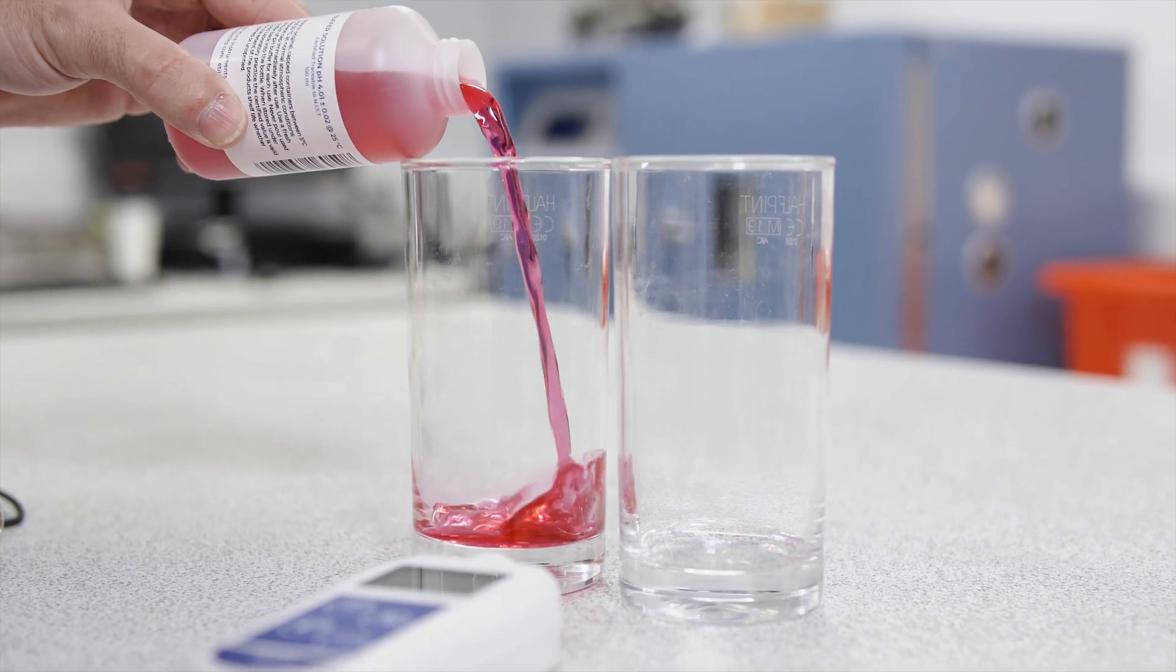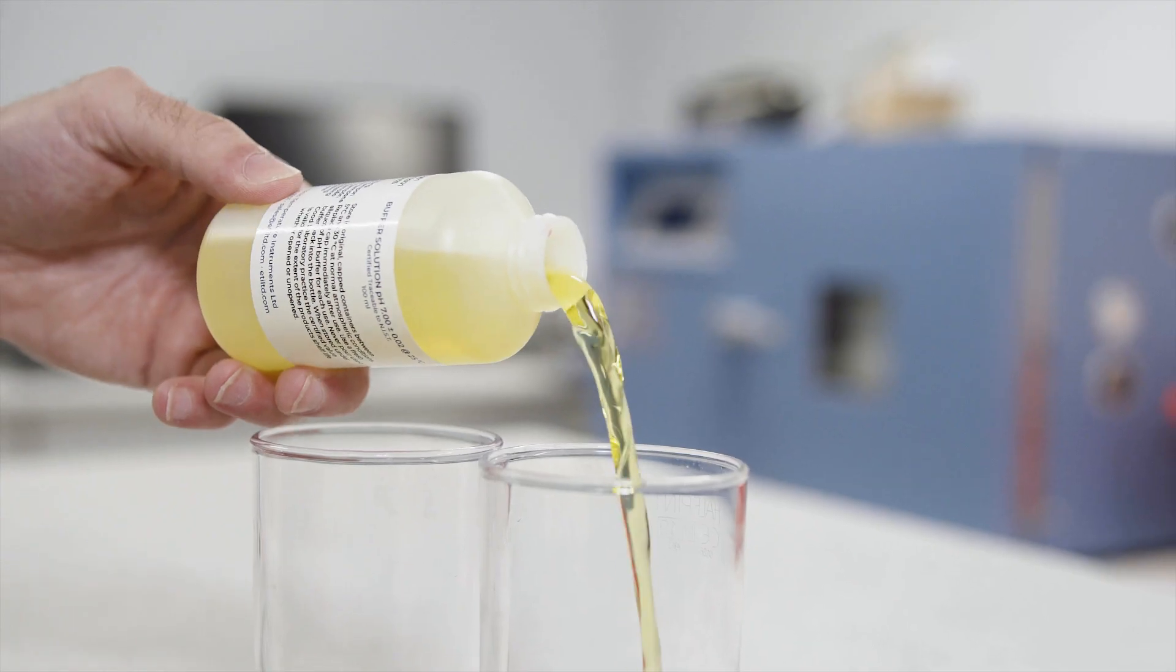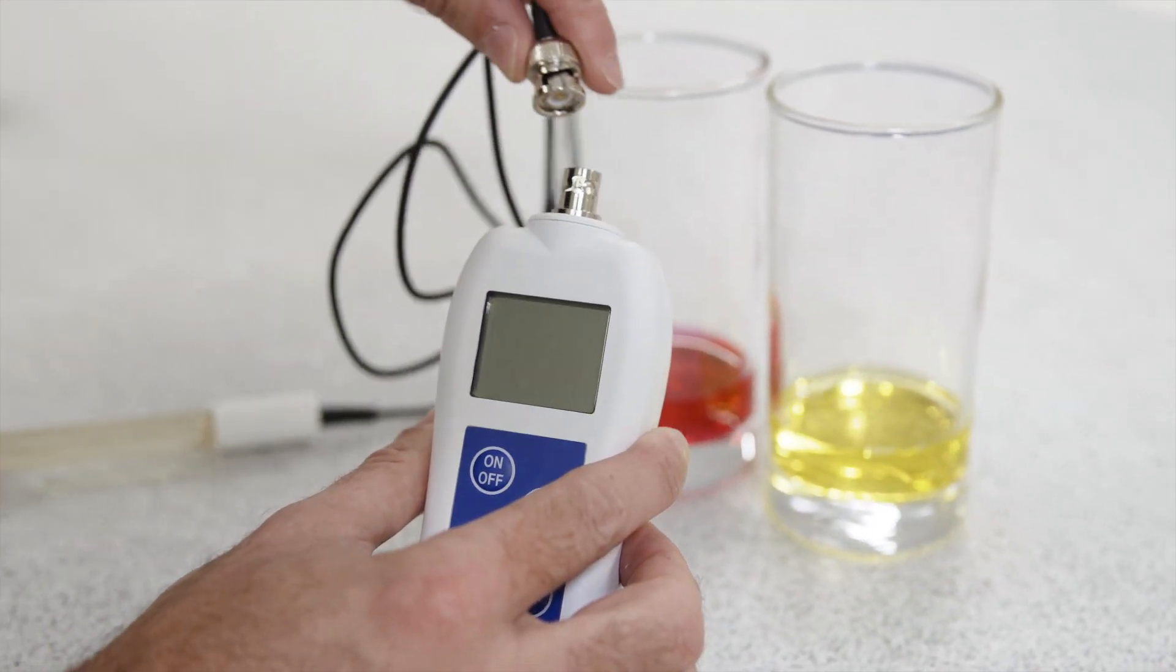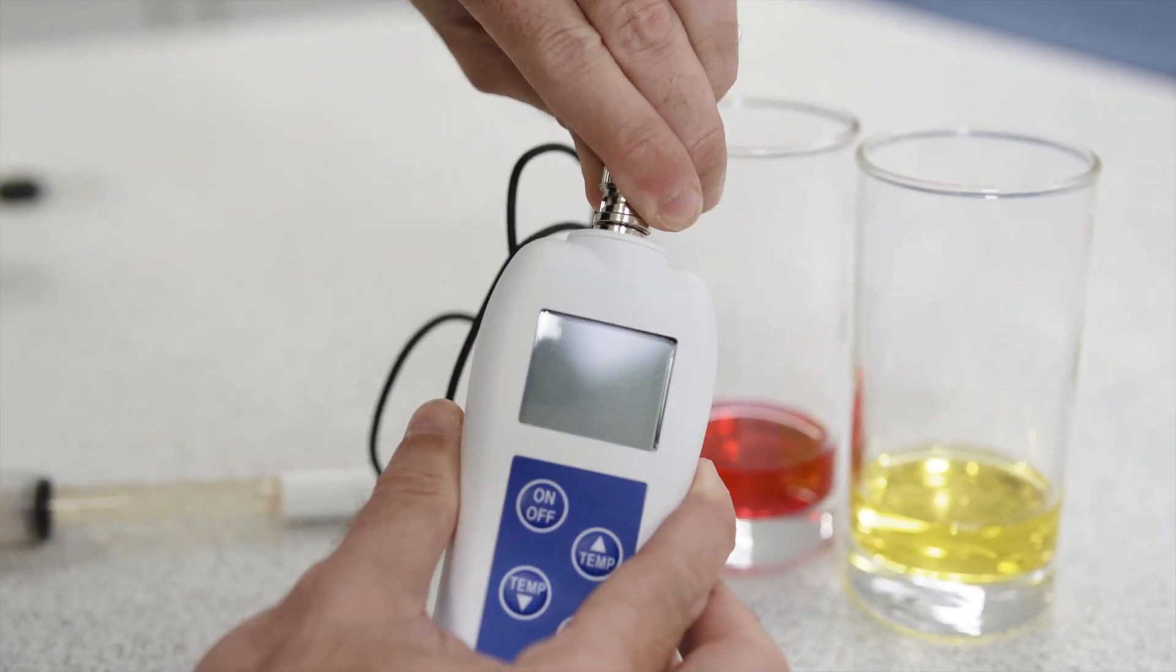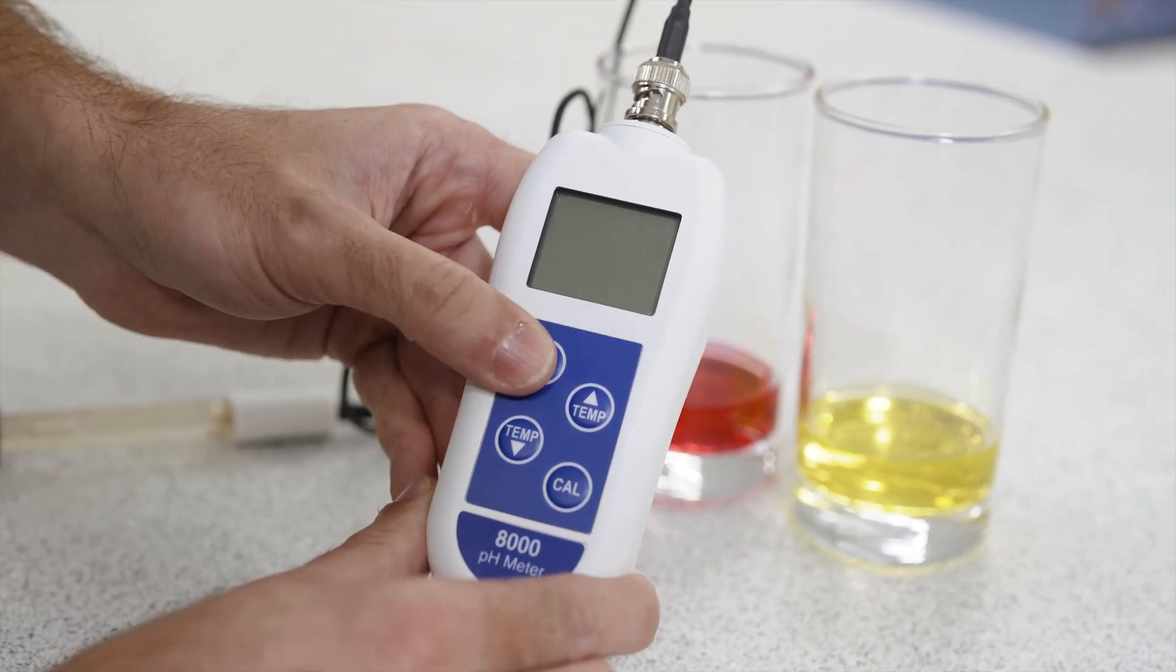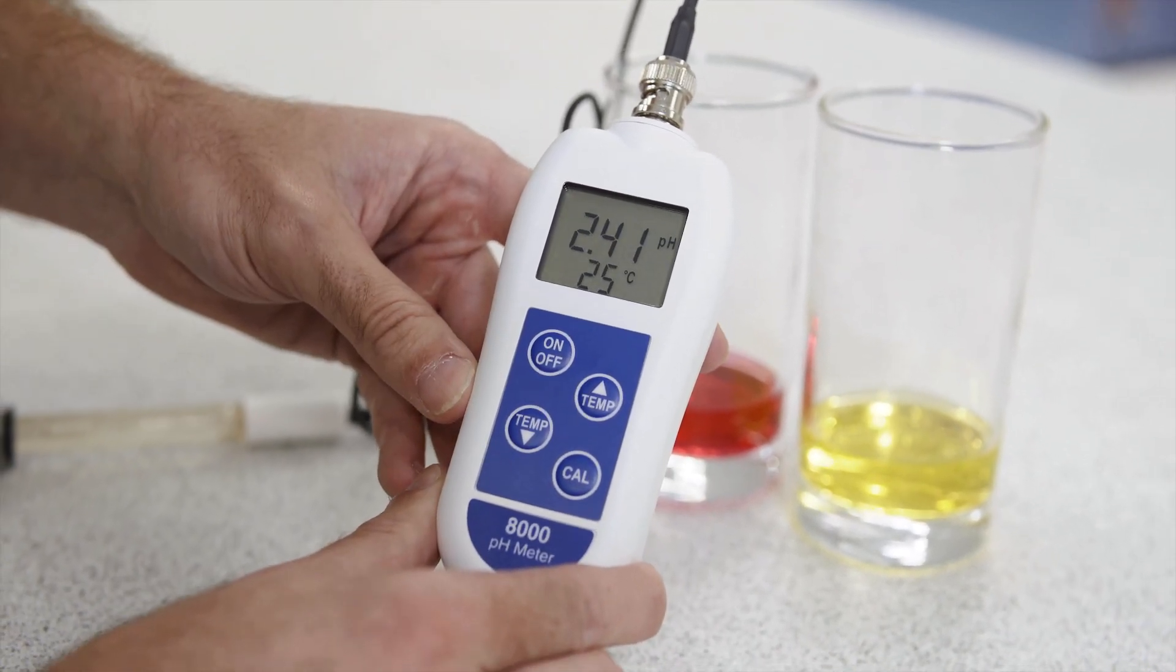Start by pouring a small amount of the two buffer solutions into two separate containers. Connect the pH electrode to the pH meter. Turn the unit on by pressing the on-off button.